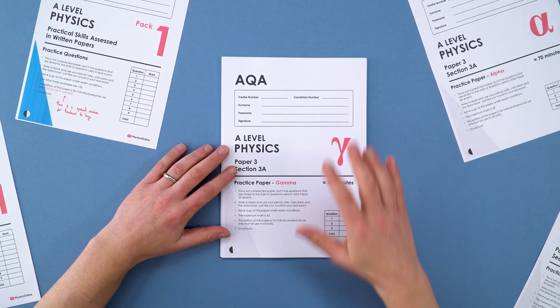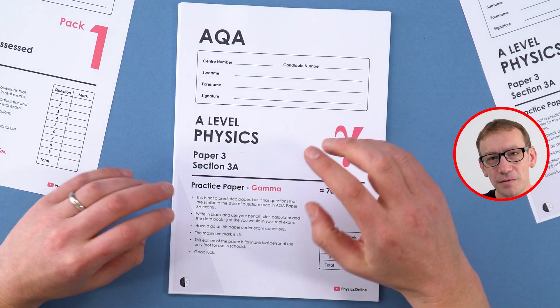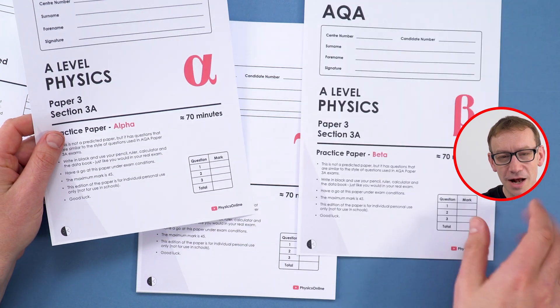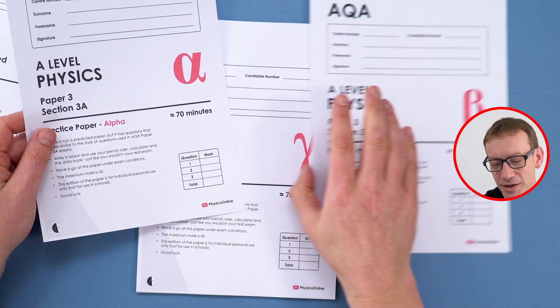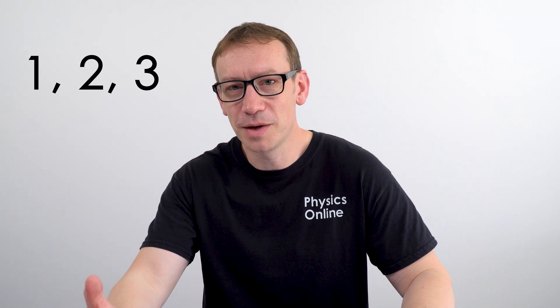Now what I've produced are these: my practice papers for the practical side of A-level physics. I've got three of them which I initially did for AQA. I've got the alpha version, the beta version and the gamma version. The reason I called them alpha, beta and gamma was because if I called them sets 1, 2 and 3, then I would get confused between paper 1, 2 and 3.